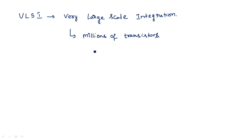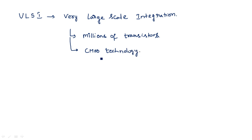When we are going for the fabrication of such millions of transistors, which technology is suitable? There are different families available like TTL family, DTL family, RTL family, and CMOS logic families. Among all these, the technology best suited for the fabrication of VLSI or integrated circuits is MOS technology — CMOS technology. CMOS stands for Complementary Metal Oxide Semiconductor.